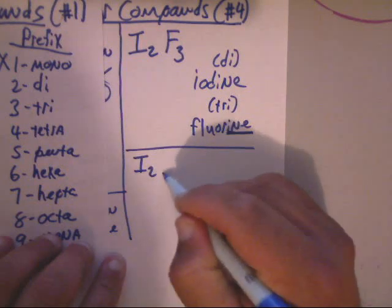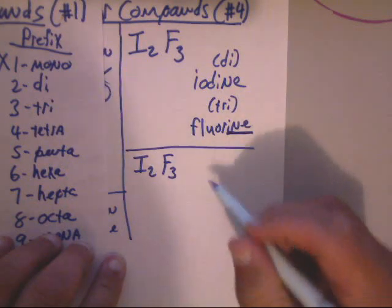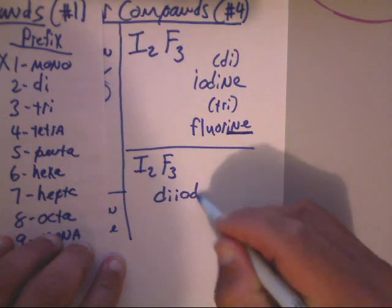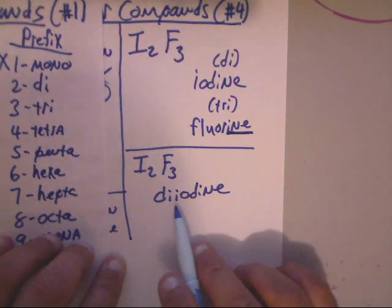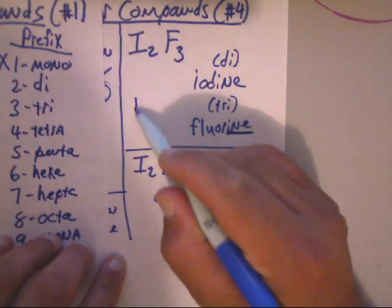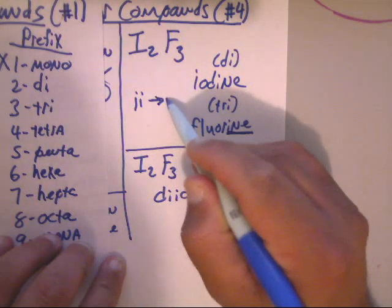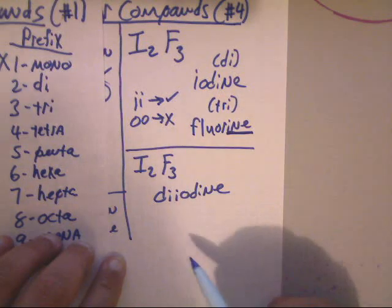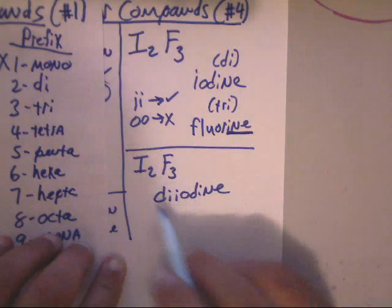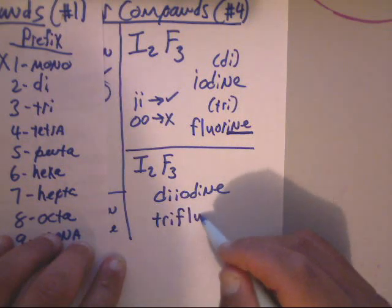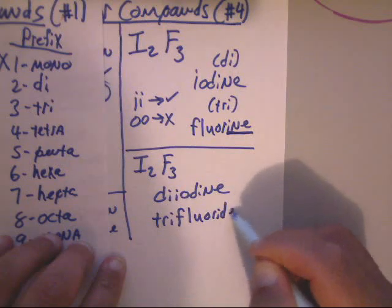But anyway, let's put this together. Now we've got for the I2F3, we've got diiodine. Now that's why I wanted to use this one, is to show you that two I's is okay. Two I's are good. Remember, two I's are a yes, and two O's, well that's not good, you're not allowed to have that. Okay, so this is diiodine tri-, instead of fluorine it'll be fluoride, and that's it on that.